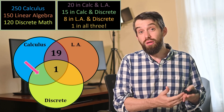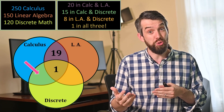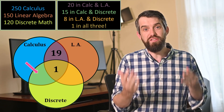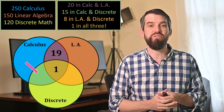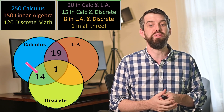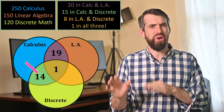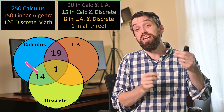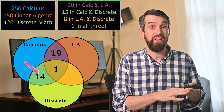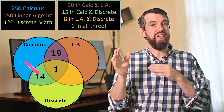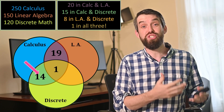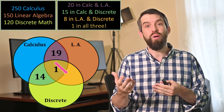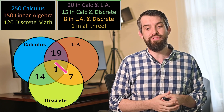I'll encourage you to pause the video and see whether you can fill in all the different locations in this diagram yourself. The other double intersection — students in linear algebra and discrete math but not calculus — is 8 minus 1, which is just 7.